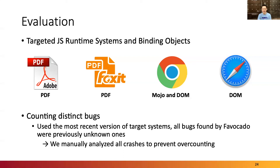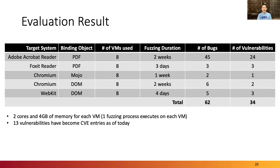To prevent over-counting distinct bugs, we manually analyzed all crashes that occurred while fuzzing target programs. Our evaluation clearly demonstrates that Favocado can play an important role in finding bugs in binding code of various JavaScript runtime systems. In total, we found 62 new and distinct bugs from four JavaScript runtime systems within short fuzzing campaigns ranging from just three days to two weeks for each target.